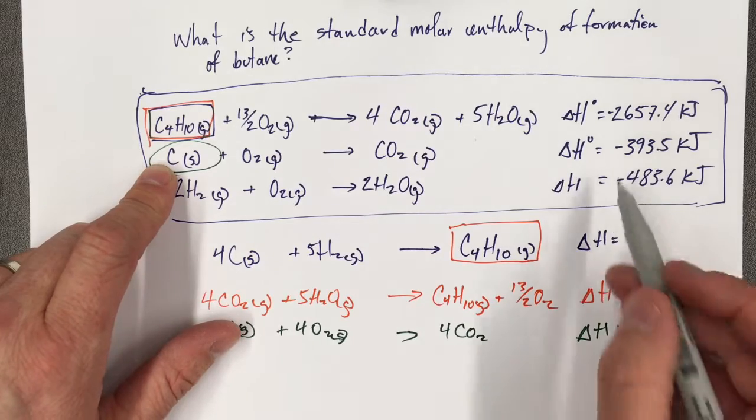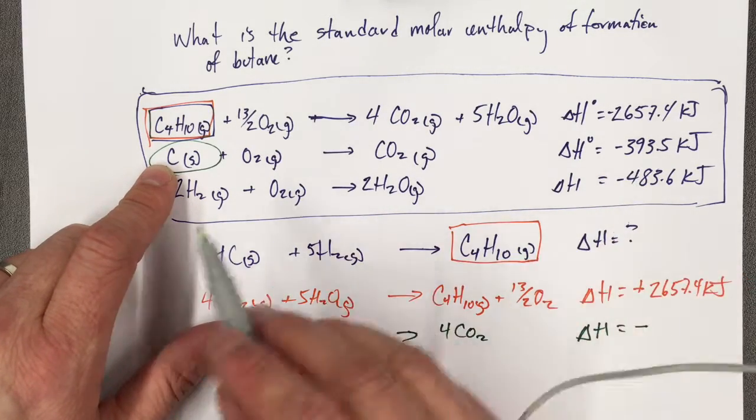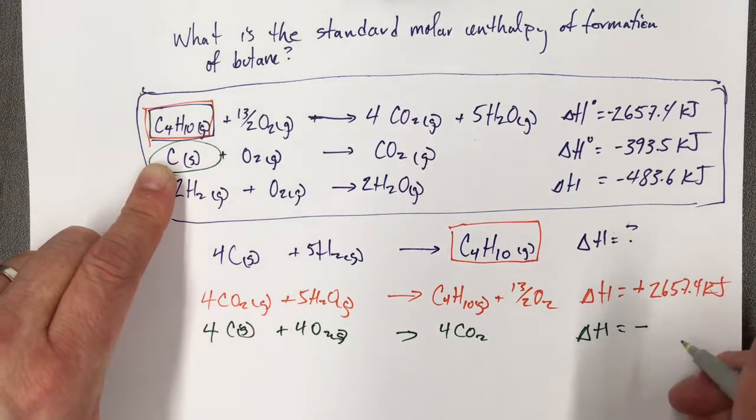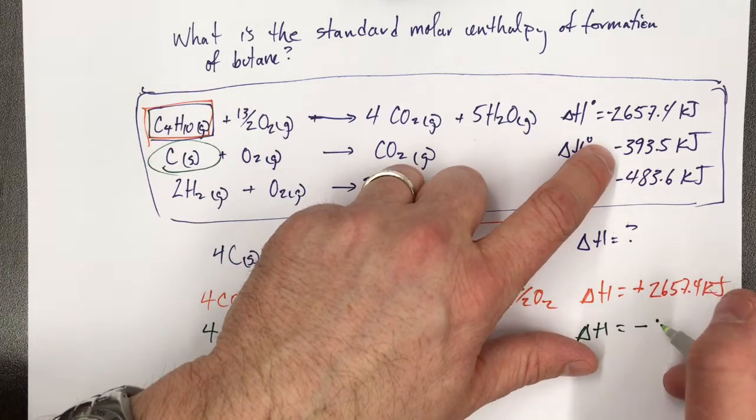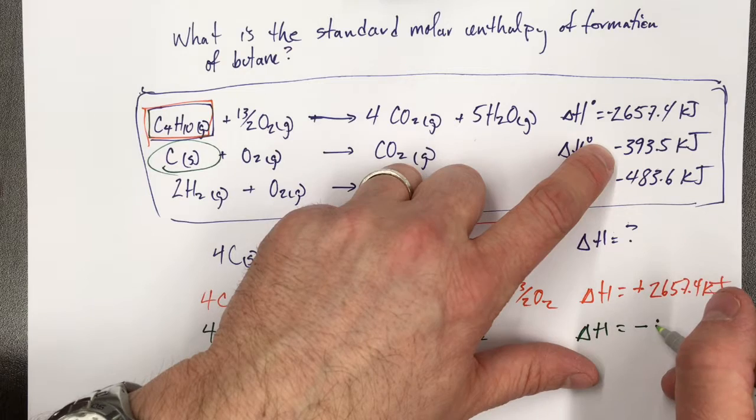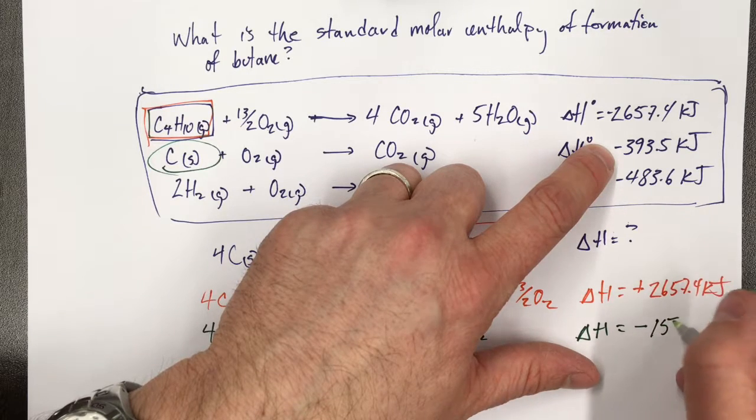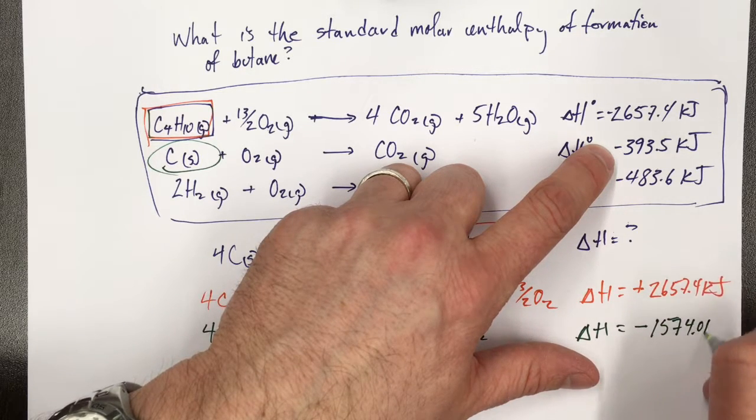So if I do that, it gives me the same symbol, it's a negative, because it's still written in the same direction, but it's going to be 4 times as big a number. So instead of it being this, it's going to be negative 393.5 times 4, which is negative 1574.0 kilojoules.